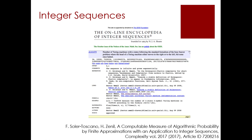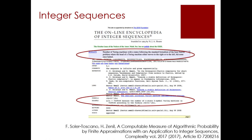I have myself introduced a few entries in the database — about seven sequences that were not already in it, based on different algorithmic processes. One of them is precisely the progression of the number of Turing machines used for the CTM method. With so many sequences in the database, it is today somehow difficult to produce new ones interesting enough to have them introduced, but many sequences do make it to the database, and it is a great dataset for testing purposes.